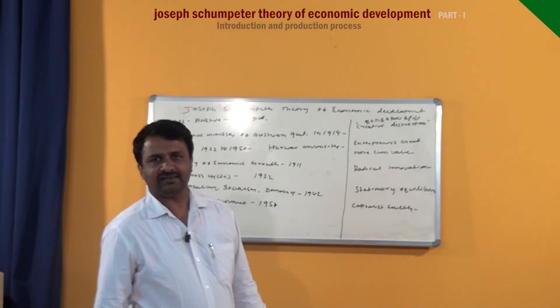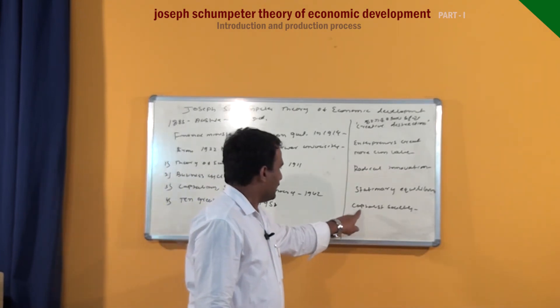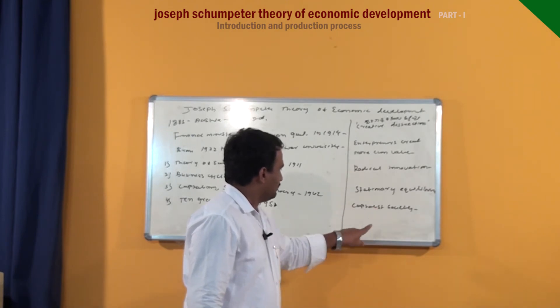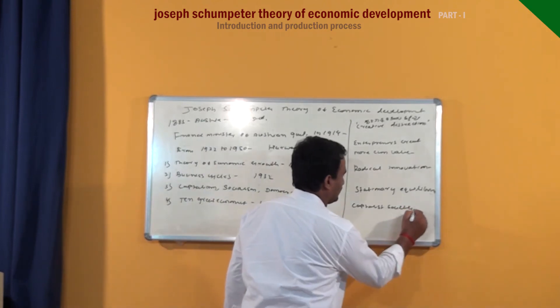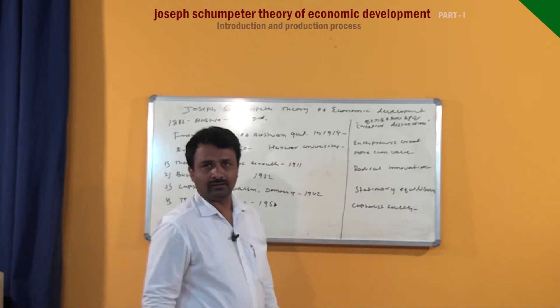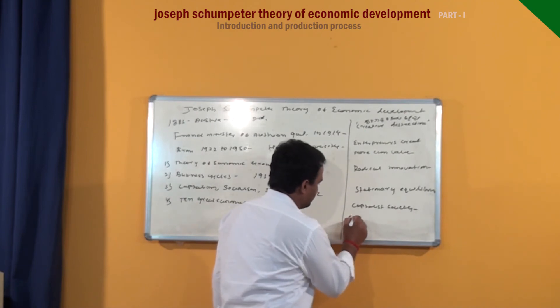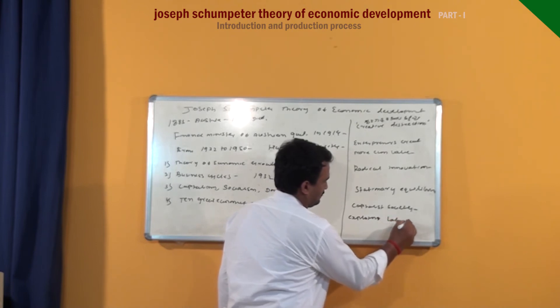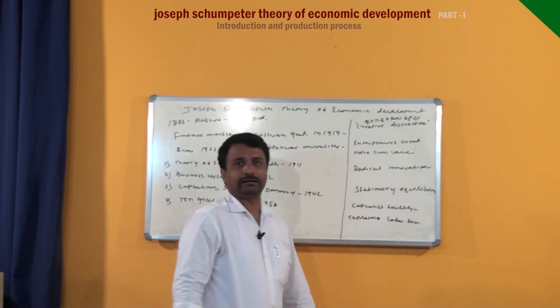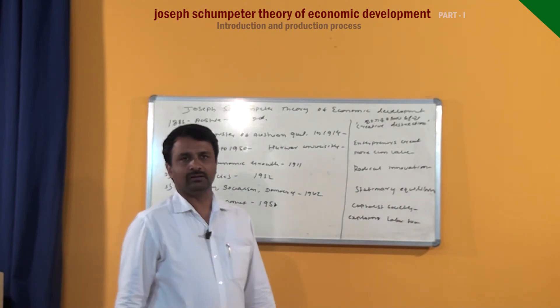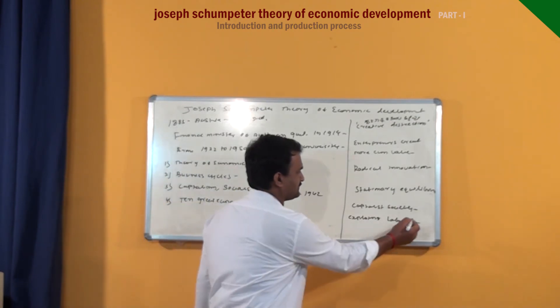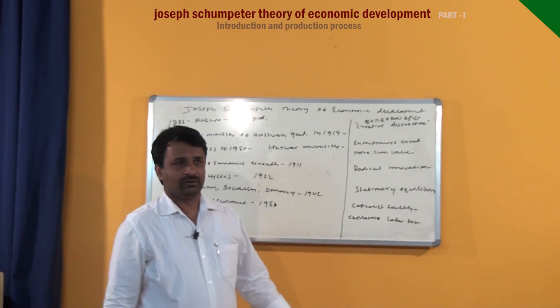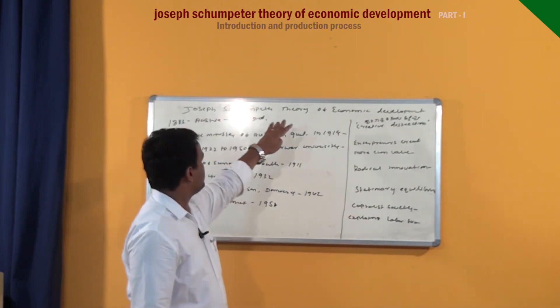Karl Marx had the view that capitalist society destroys economic growth by the way of exploiting labor force. Contrary, Joseph Schumpeter believed that capitalist economy always leads to higher economic growth.